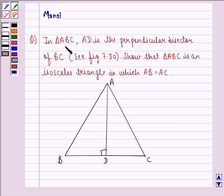The question says in triangle ABC, AD is the perpendicular bisector of BC. See figure 7.30. Here we have to show that triangle ABC is an isosceles triangle in which AB equals AC.